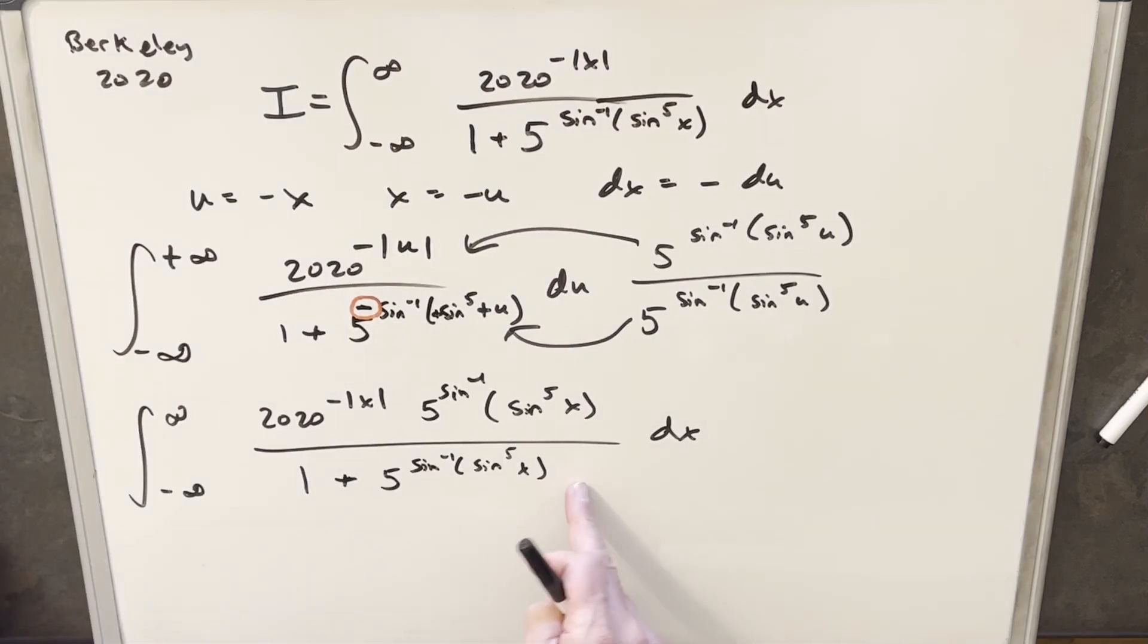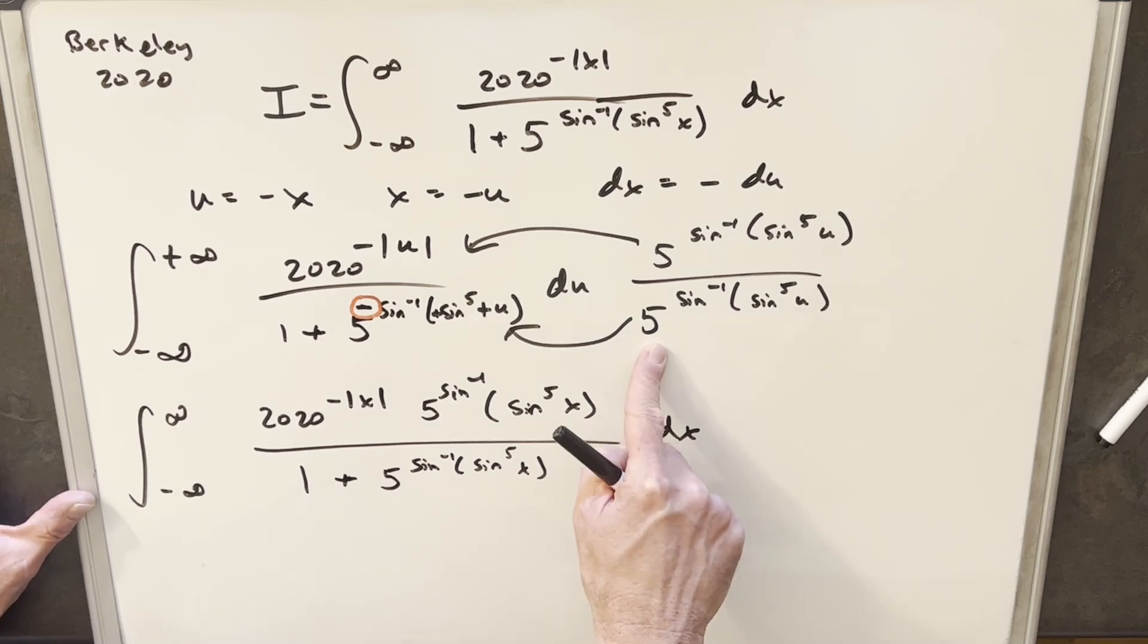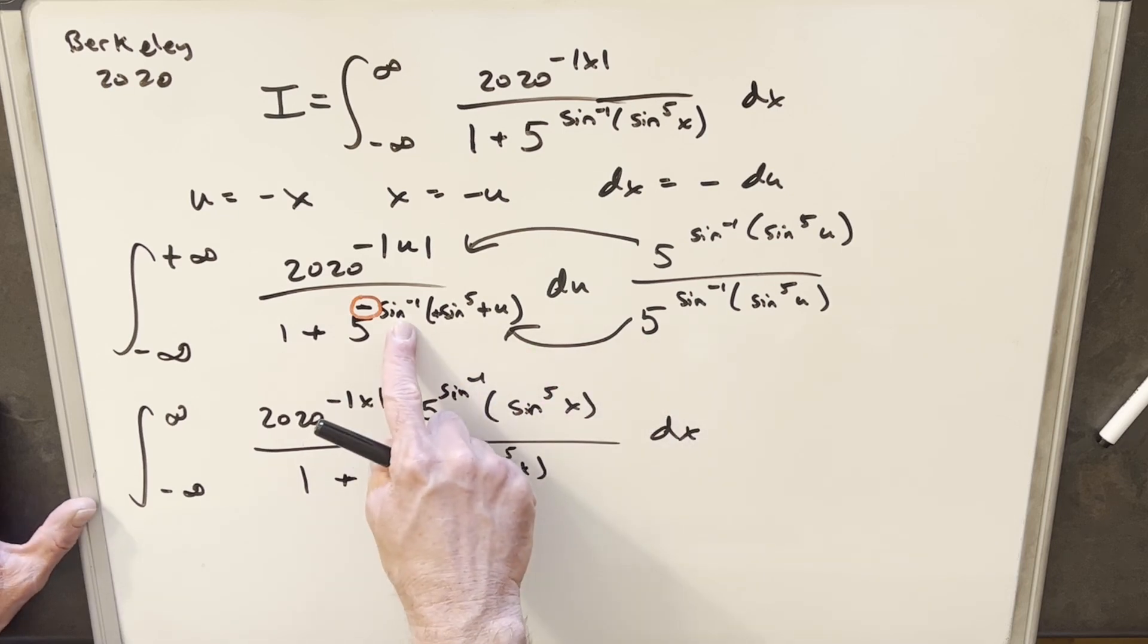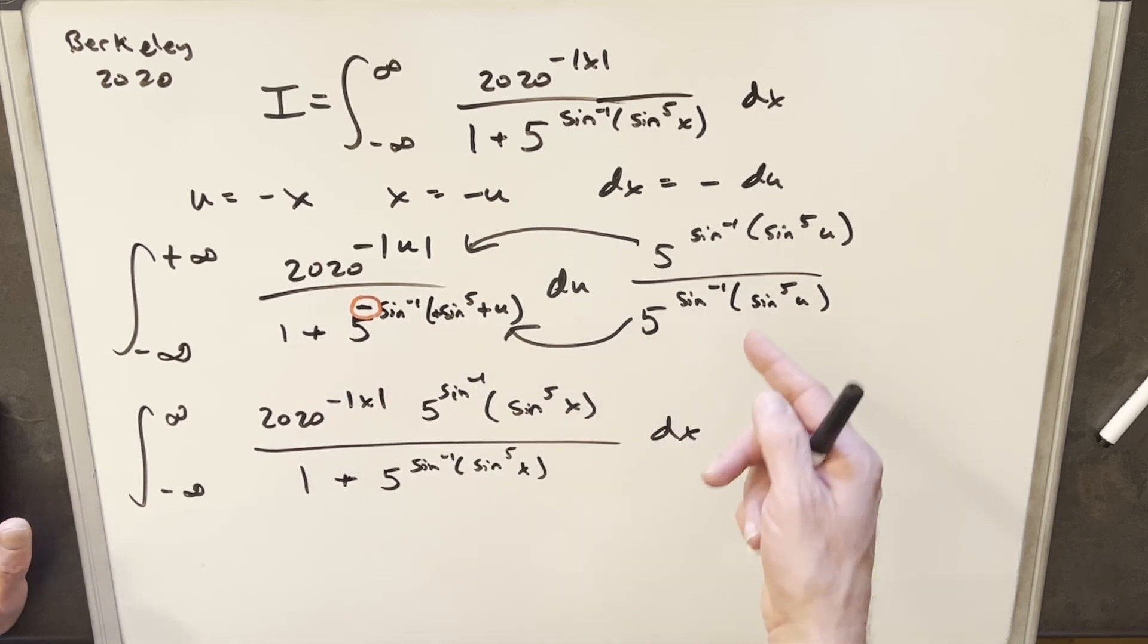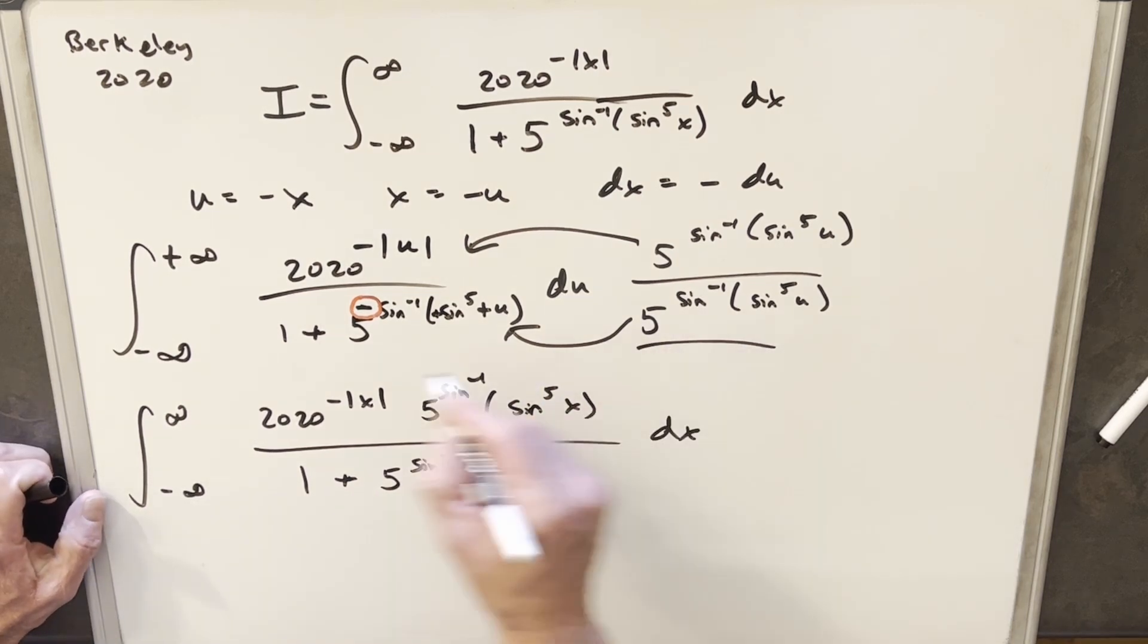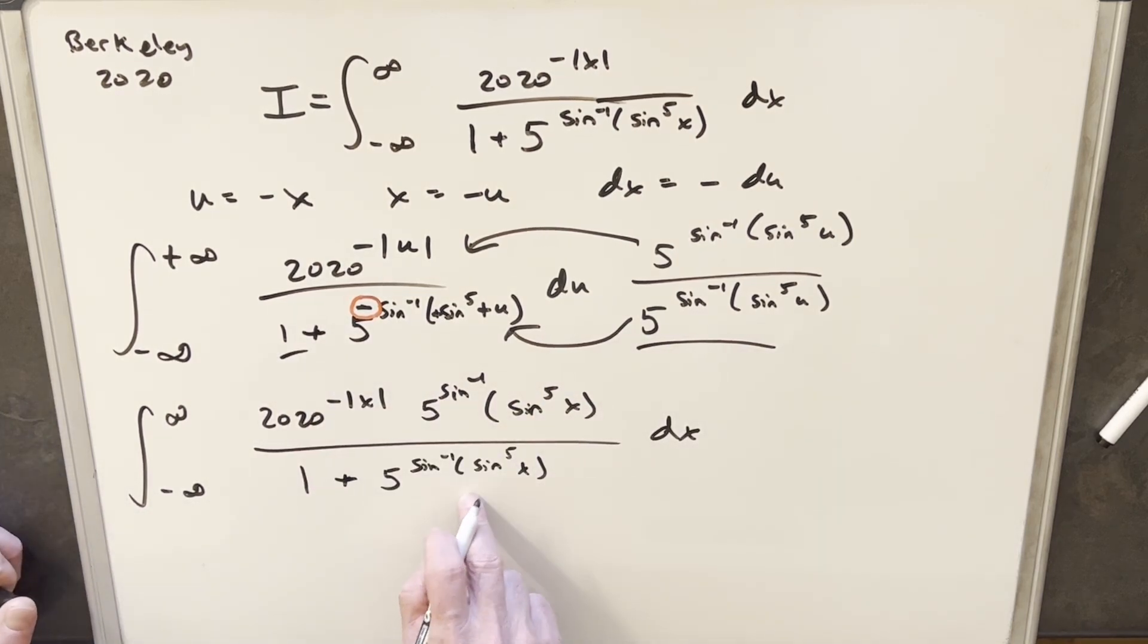Now that we've multiplied in, we've changed back to x. And just notice on this denominator, we multiplied this term times this term. We ended up with our 1. That's because you add the exponents, and we add this to this, and we get 0. 5 to the 0 is 1. And then we just multiplied this times the 1 to get this 5 arc sine term over here.